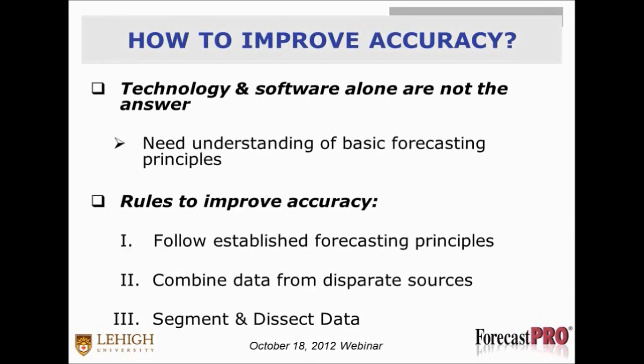How do we improve accuracy? We do have incredible technological capability today. I want to underscore that you cannot run a world-class operation without using technology and software. However, what I'm seeing with a lot of companies is a tendency to abdicate all knowledge and responsibility to the software. Technology and software enhances good practices but doesn't replace them. So we need a basic understanding of forecasting principles that helps us use the technology in the best way possible.